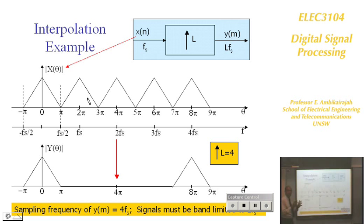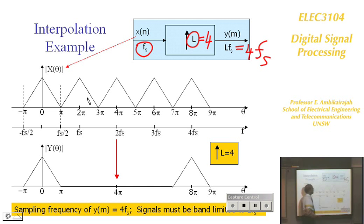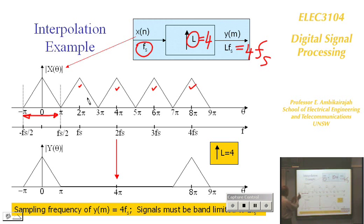Here is signal Xn at sampling frequency Fs, to be interpolated by L=4. After inserting L-1=3 zeros between each sample, the spectrum repeats — the fundamental region plus copies. If you want to increase the sampling frequency to 4Fs, the spectrum should appear at 4Fs.